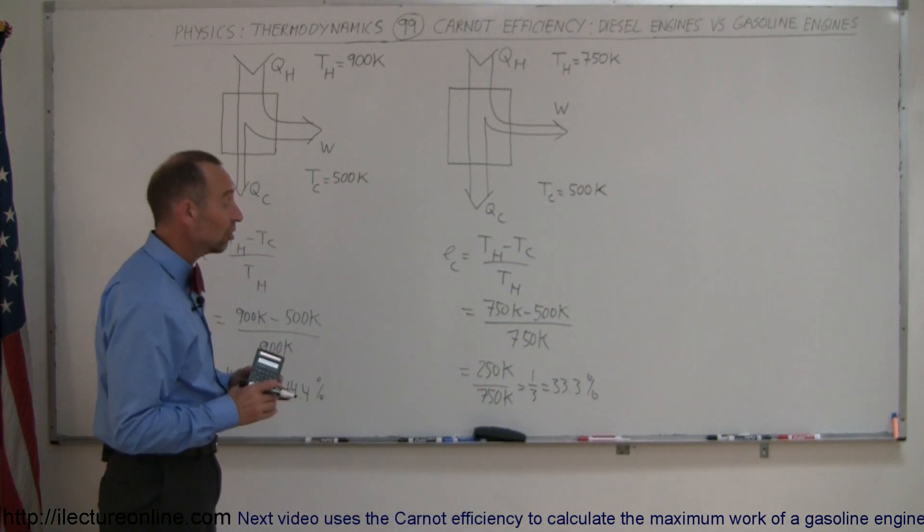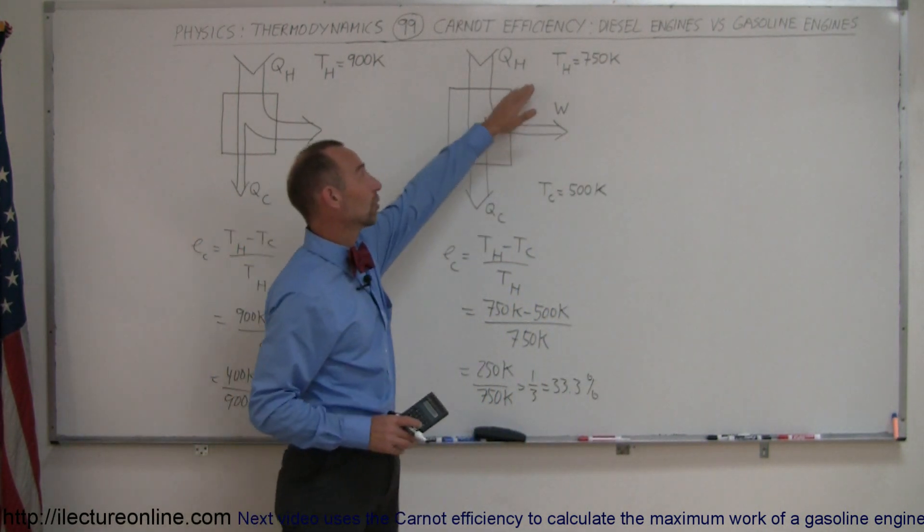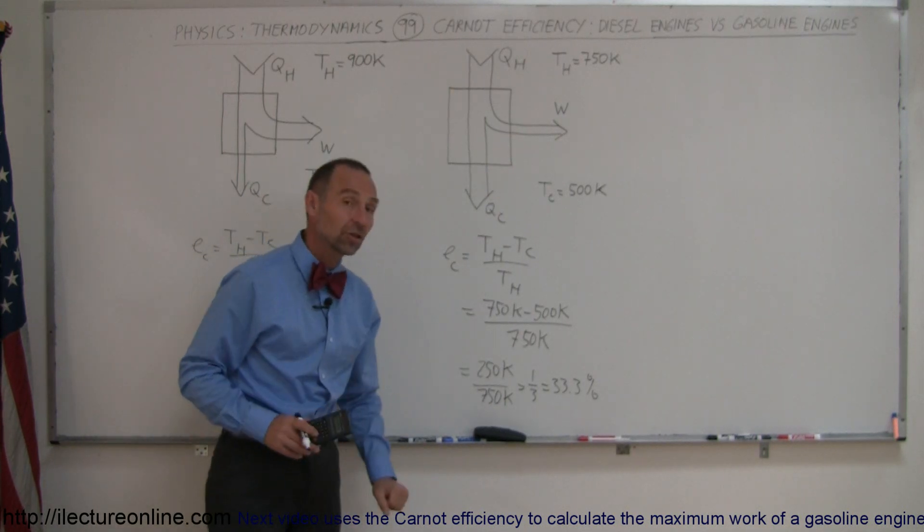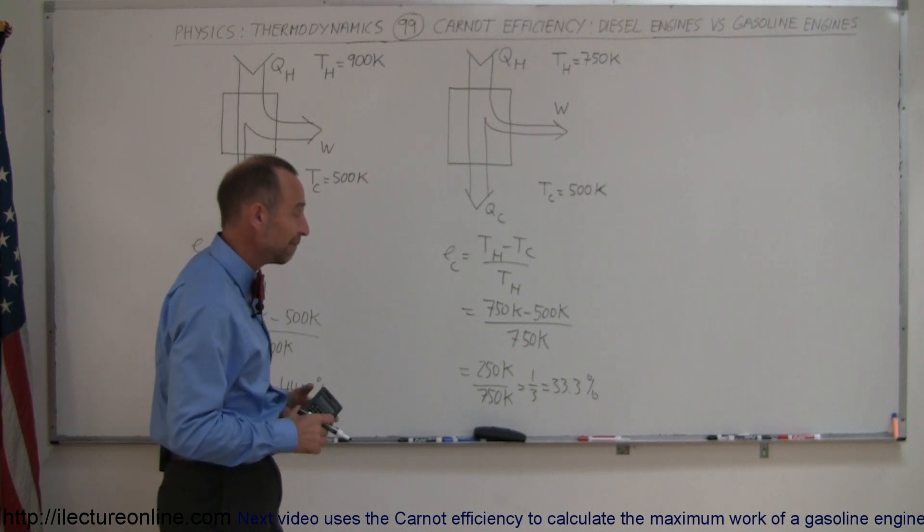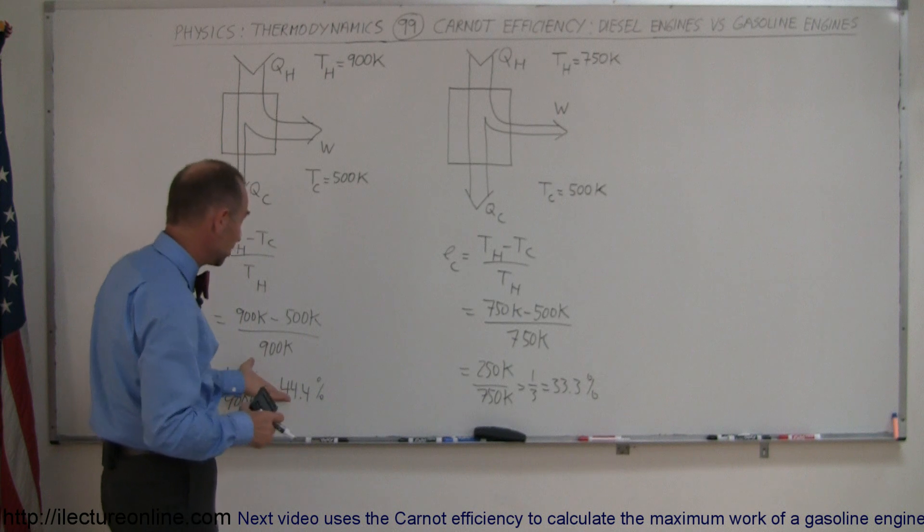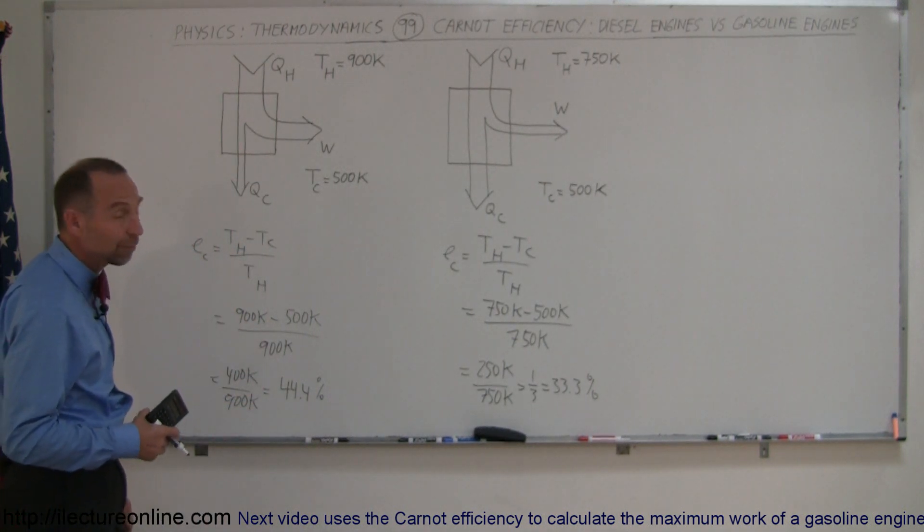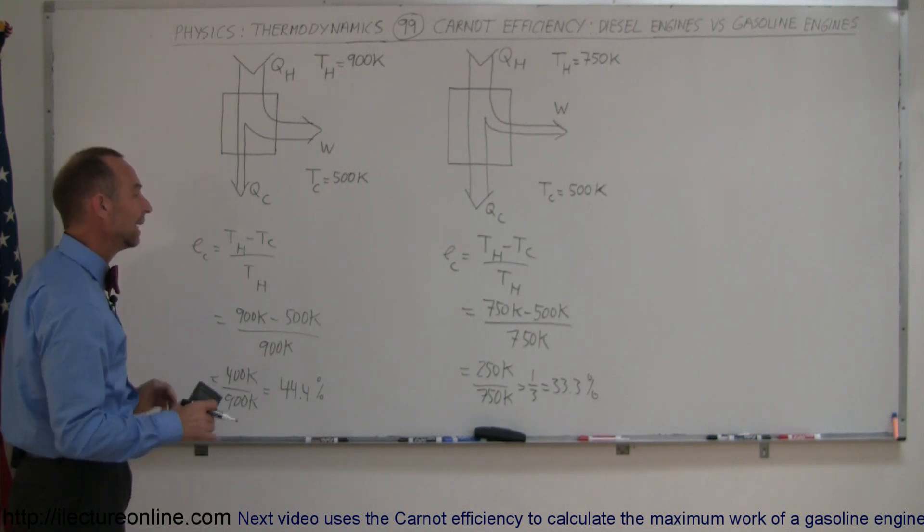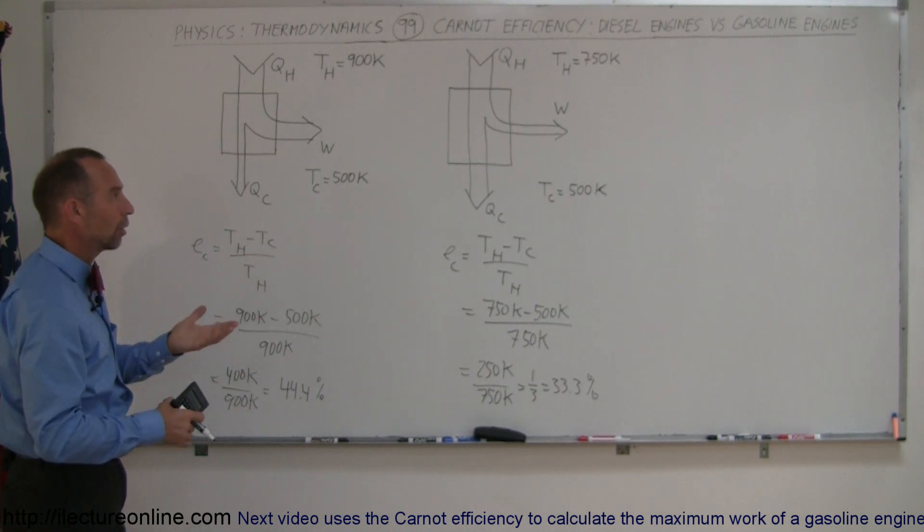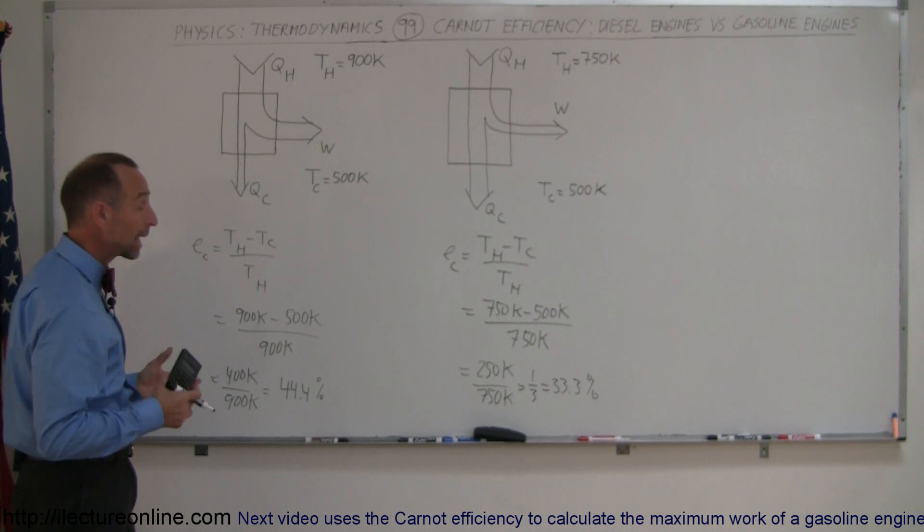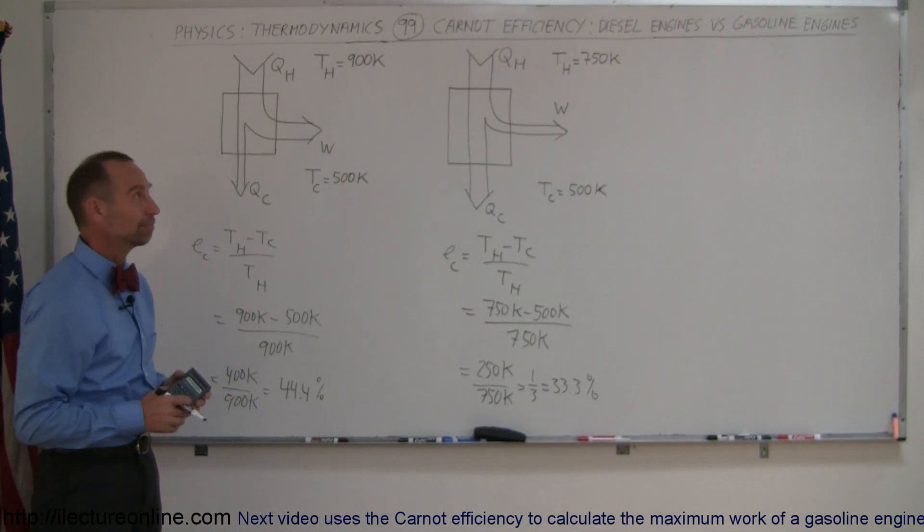If you build a gasoline engine, they don't run at as high a temperature as diesel engines. Therefore, the maximum possible efficiency you can obtain with a gasoline engine is 33.3%. In reality, they may only get about 25% out of the engine. With the diesel engine, maybe the maximum they get is 35%, 37%. But at least you can see that the maximum efficiency you can obtain is limited by the Carnot engine, by the theoretical Carnot engine, which is determined by the temperatures at which the engine operates. That's how you do that. Thank you.